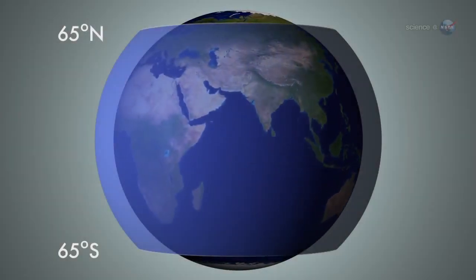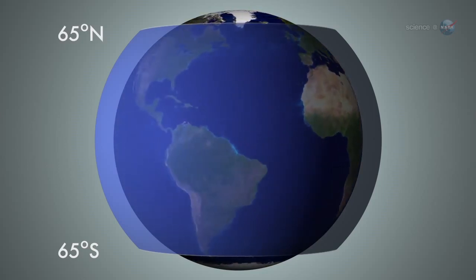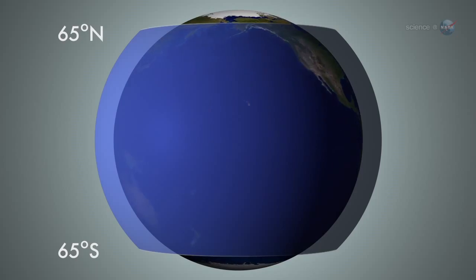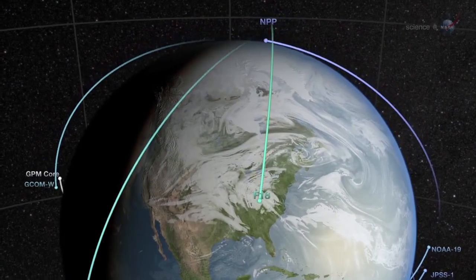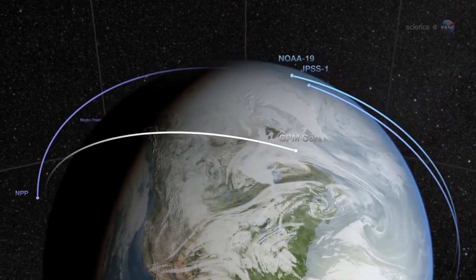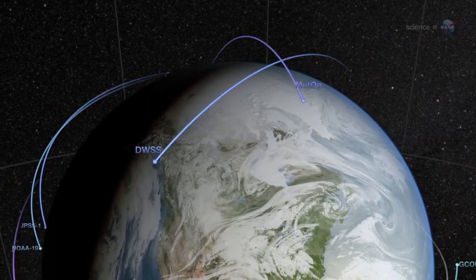GPM will fly 253 miles above Earth in an orbit inclined 65 degrees to the equator. This orbit allows the satellite to monitor precipitation all the way from the Arctic to the Antarctic circles. Working with a network of other satellites, some already in orbit and some planned for the future, GPM can measure rain and snow every three hours anywhere on the globe.